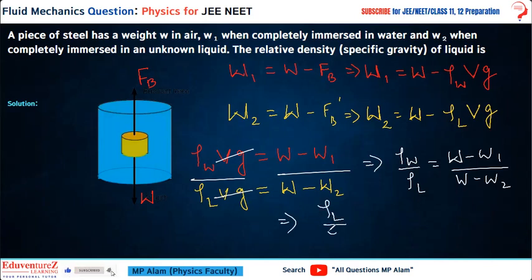Actually, we were asked for relative density. Relative density is density of the body or liquid with respect to water, meaning density of body by density of water. So we need to take the reciprocal, giving us relative density = (w - w2)/(w - w1).